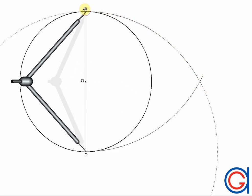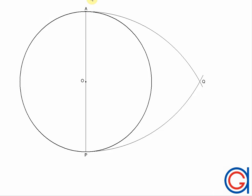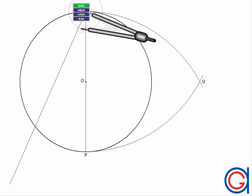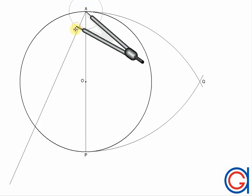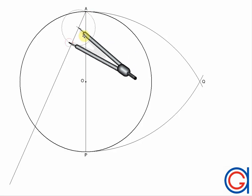Our next step is to divide the diameter we drew previously into as many parts as we want our polygon to have sides. For example, in this case we want to draw a decagon, or a ten-sided polygon. So we have to divide the diameter into ten equal parts, and to do this we will use Thales' theorem.